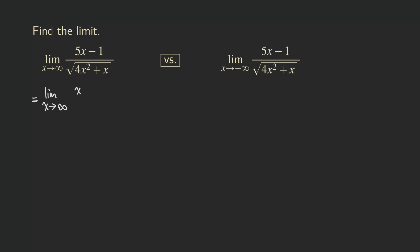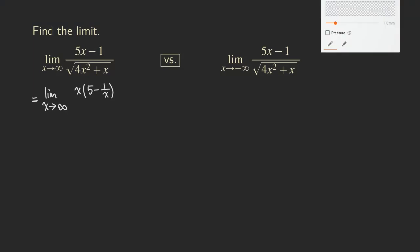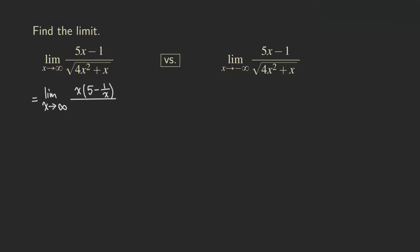So if we factor out the x, then we are going to be getting 5 minus 1 over x. And then what about the denominator? The denominator is actually the same thing — we are going to be factoring out x squared, because that's the highest power for the stuff inside the radical. And then we're left with 4 plus 1 over x.